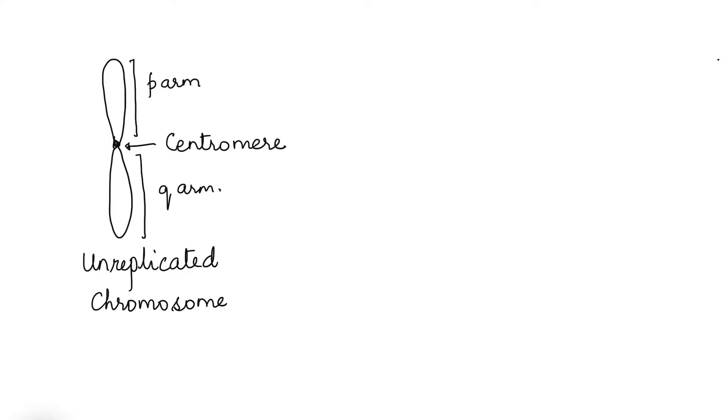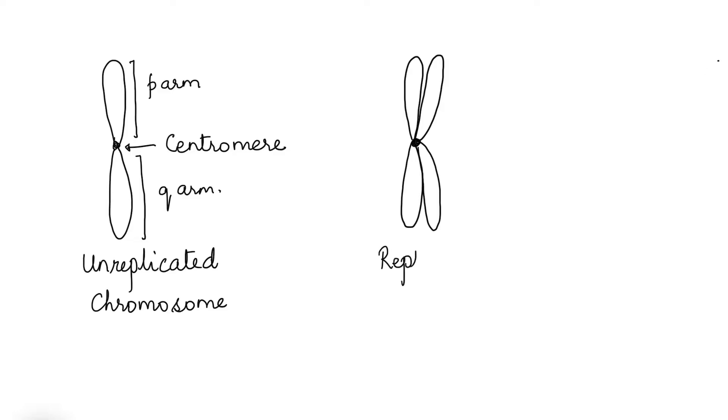The chromosome replicates before cell division. Here I am drawing another strand attached to the same centromere. Now there are two strands connected by one centromere. This is the replicated chromosome.